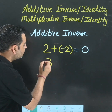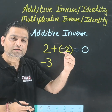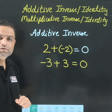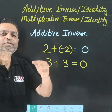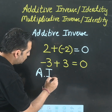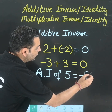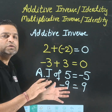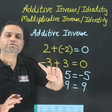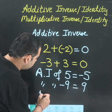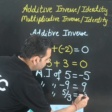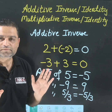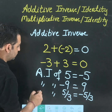So additive inverse is just the change of sign. For example, if my given number is negative 3 and I need to find the additive inverse — what should I add to get zero? I need to add 3. In short, I just need to change the sign. Additive inverse of 5 is minus 5; additive inverse of minus 9 is 9. Additive inverse of 5 over 3 is minus 5 over 3. Negative value gives positive answer; positive value gives negative answer.